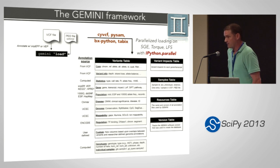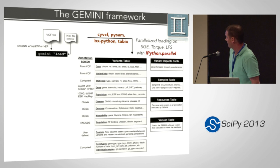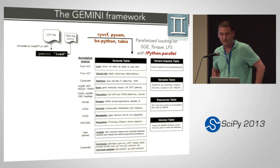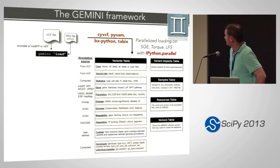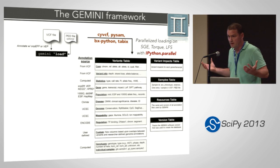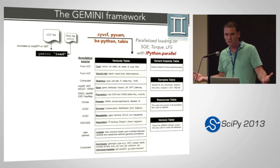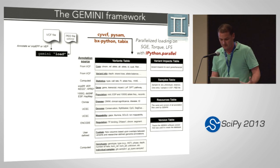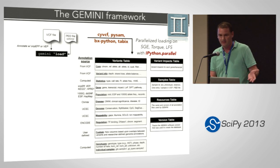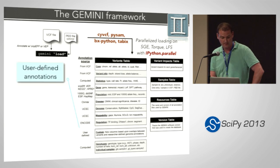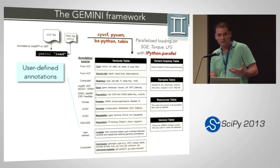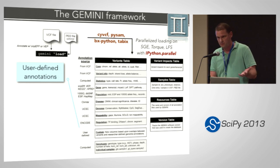That's a fairly computationally intensive process. One of the innovations that Brad and Rory have contributed to the project is using IPython parallel to distribute this over LSF, SunGrid, or Torque compute nodes, or run it on a local box with multiple CPUs. It speeds things up dramatically because it's an embarrassingly parallel process. Users can also add their own annotations on load, which really helps because inevitably there's going to be some annotation relevant to just your research.